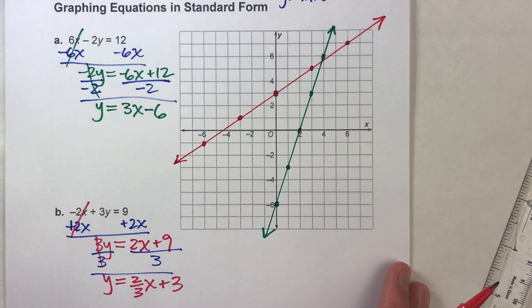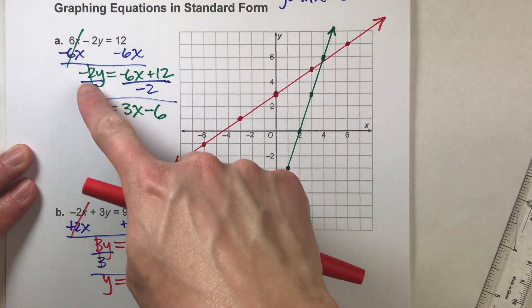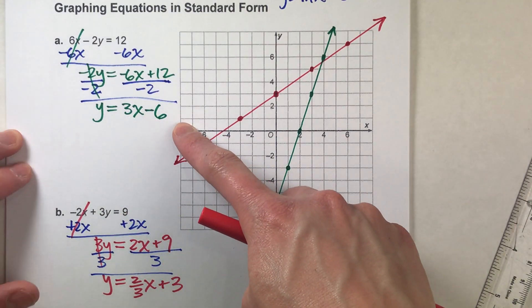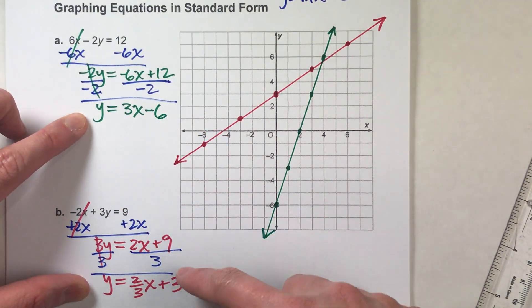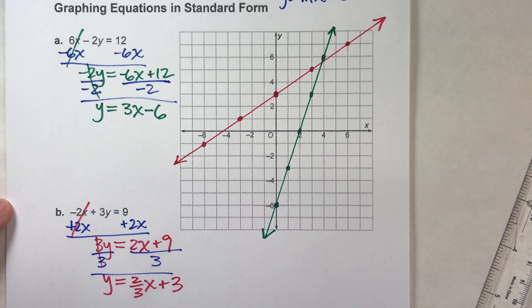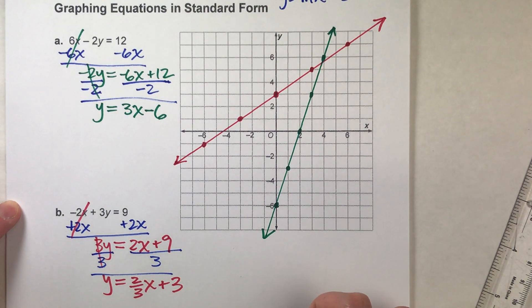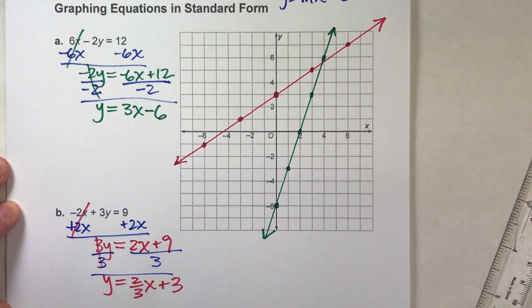Okay, so the key to graphing equations in standard form is: use some algebra, get y by itself on one side of the equal sign so that the rest of the equation is in slope-intercept form, then graph it using your y-intercept and your slope. Alright, so I hope you found this helpful. If you did, make sure you hit that like button, also subscribe, it really helps us out. But with that being said, good luck on your math and I will see you next time.